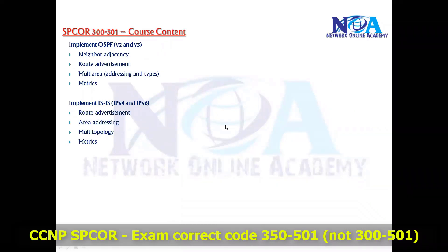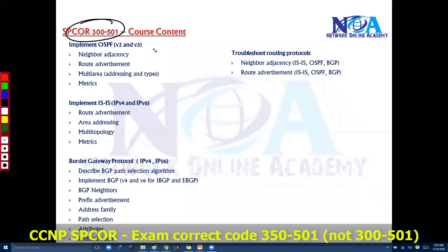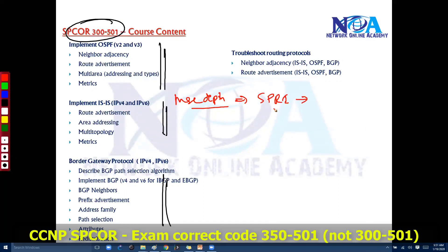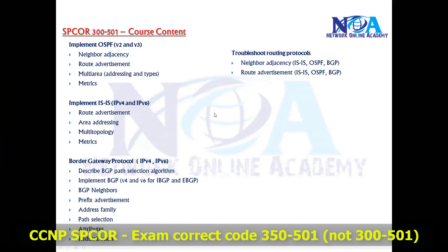Apart from OSPF and IS-IS, we'll also cover BGP — obviously the main protocol used inside the service provider network, especially for connecting to the internet. We'll see BGP implemented with respect to both IPv4 and IPv6. We'll also see some troubleshooting. In this core paper we'll limit these concepts to some extent — more depth will come in the dedicated paper for implementing service provider routing, which is approximately exam 350-510. The service provider core paper is more of an overview and foundation, so we have a limitation and will stop at that point. We'll also cover troubleshooting of all three protocols and routing advertisements.